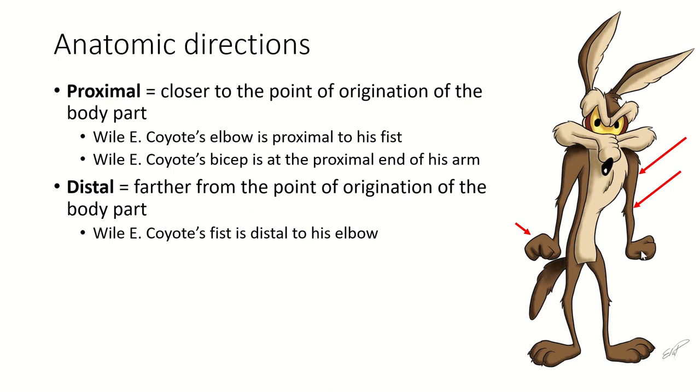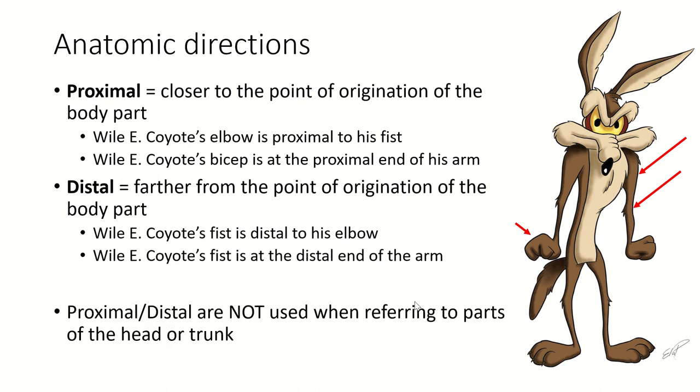Now, we normally talk about the proximal end of something or the distal end of something. But we will talk about terms in relation to each other as one thing being proximal to something else, meaning closer to the point of origin. Now, these are not used when referring to parts of the head or trunk. The trunk doesn't have a proximal and distal end. It is the point of origin of the arms and legs. You could talk about the proximal end of the tail, the distal end of the tail. You can't talk about the proximal and distal ends of the head because the head doesn't really have an origin. It's the head. It's a thing.